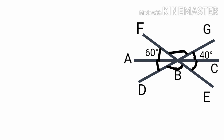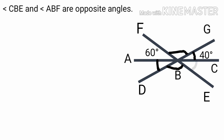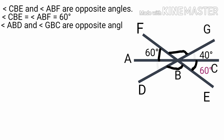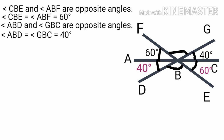Next figure — mark points A, B, C, D, E, F and G. Here angle CBE and angle ABF are opposite angles. Therefore angle CBE is equal to angle ABF, that is equal to 60 degrees. Angle ABD and angle GBC are opposite angles. Therefore angle ABD is equal to angle GBC, that is equal to 40 degrees.